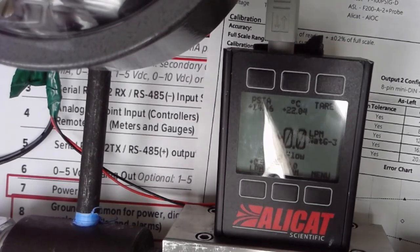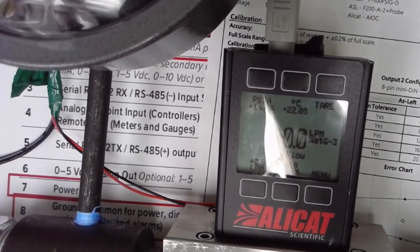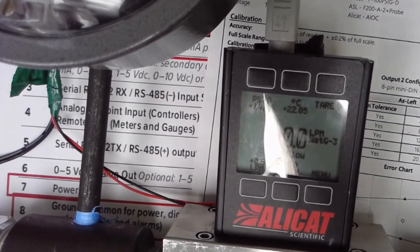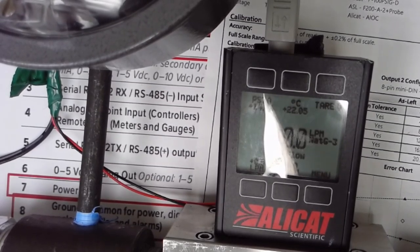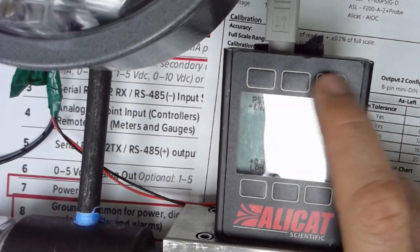You should be able to see the tear function in the right hand corner. You need to let this set for a few minutes and stabilize. Make sure you don't bump it or move it around. You're going to hit the tear button.